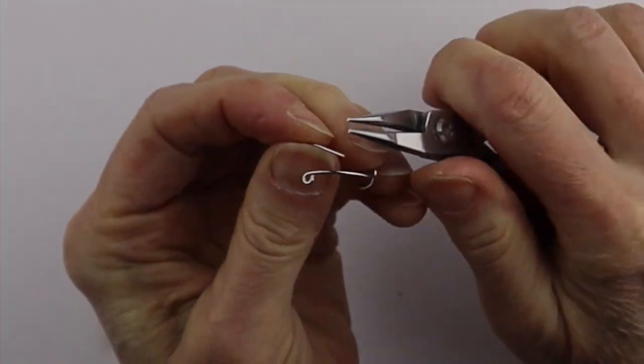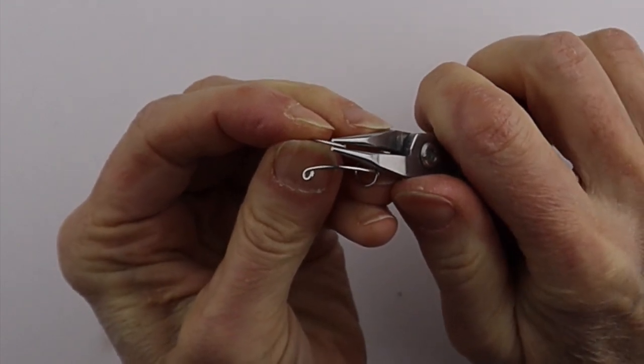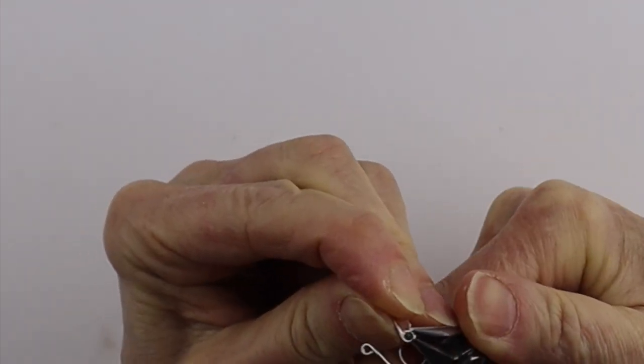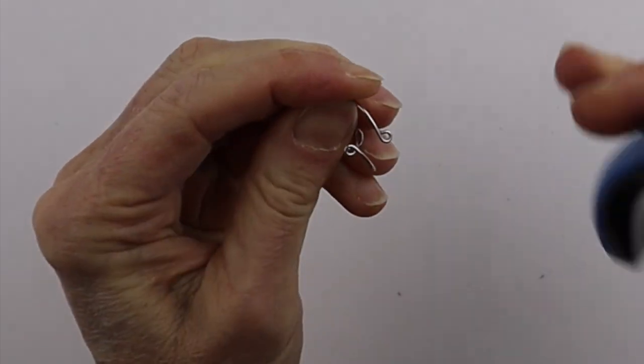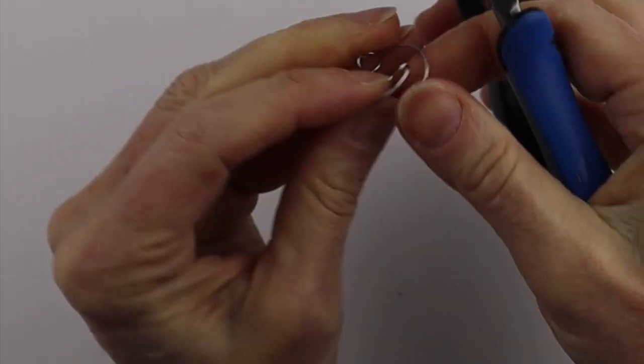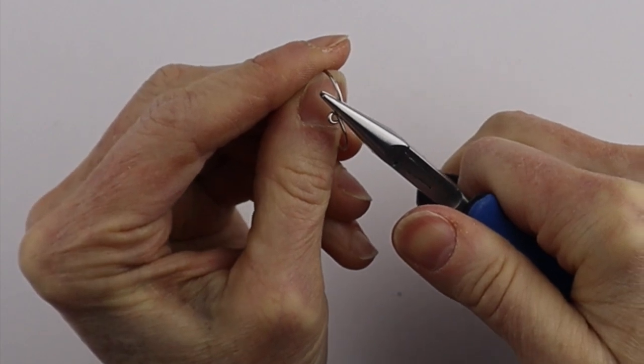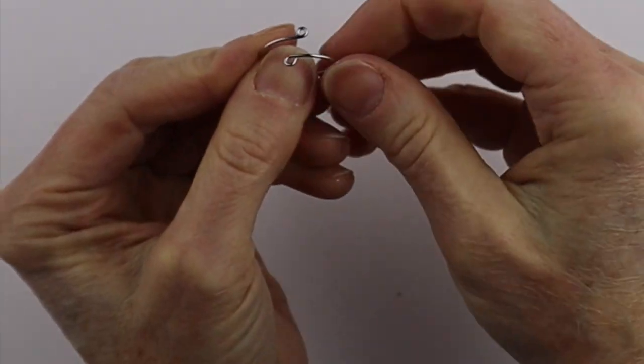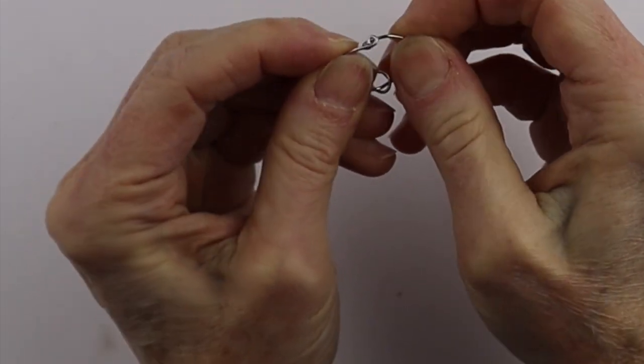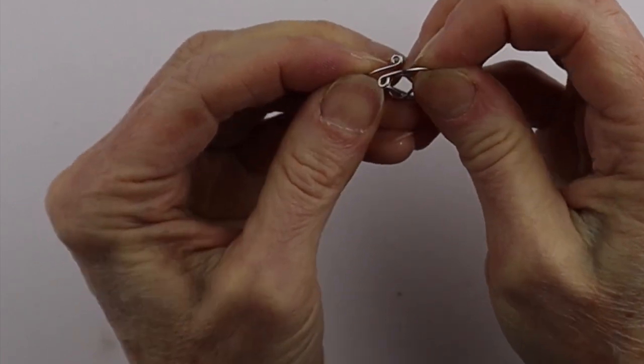And then this side too, just twist it around. And then we're going to just take our flat pliers, fix them up a little bit. And then you can just kind of bend them so they're right beside each other.